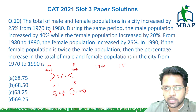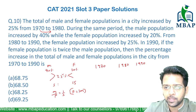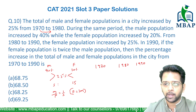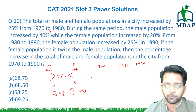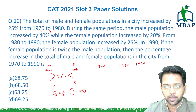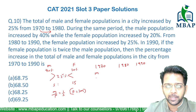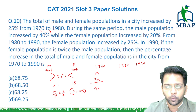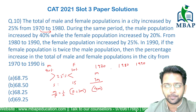Let's check what is happening in 1970, 1980, and 1990. In 1970, male will be m and female will be 3m, so the total number of people in 1970 is 4m.